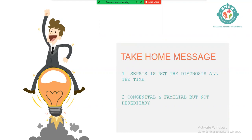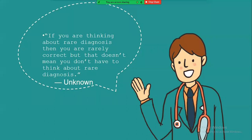GALD is congenital and familial but not hereditary. Once there is an index case, recurrence risk is very high in subsequent pregnancies. You need to team up with the obstetrician and treat the condition from 12 to 14 weeks of gestation. As I like to say: if you are thinking about a rare diagnosis, you are rarely correct — but that doesn't mean we shouldn't think about rare diagnoses.